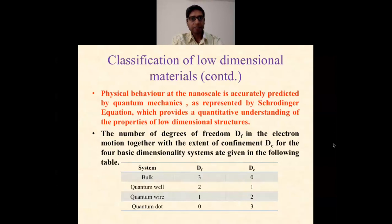Now, physical behavior at the nanoscale is accurately predicted by quantum mechanics. As I already explained, when the size reduces from bulk to nano, we cannot apply classical mechanics; we have to apply quantum mechanics represented by the Schrödinger equation. The number of degrees of freedom in the electron motion, together with the extent of confinement, forms the basic four dimensional systems given in the following table. This is just like a truth table. You can see that if the degree of freedom is three, then confinement is in zero directions. If the degree of freedom is zero, then confinement is in all three directions; those are the quantum dots.